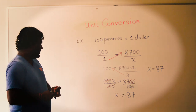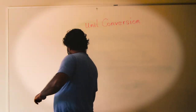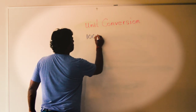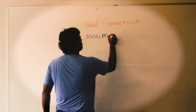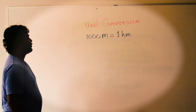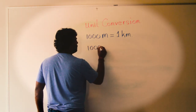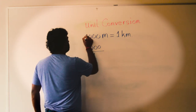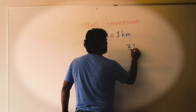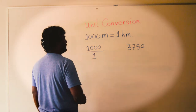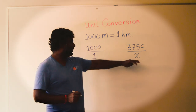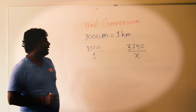Let's see another example. In the metric system, 1,000 meters equals 1 kilometer. So every 1,000 meters, there will be 1 kilometer. Now my question: if you have 3,750 meters, how many kilometers? Again, I don't know how many kilometers, so I just use X to find out the unknown variable.